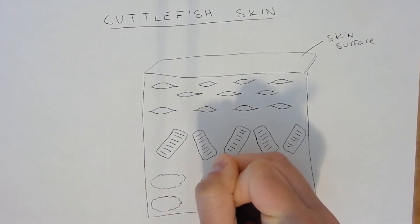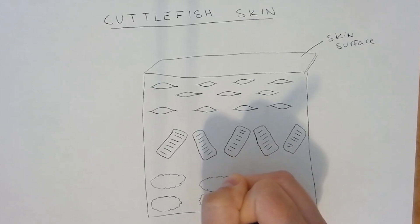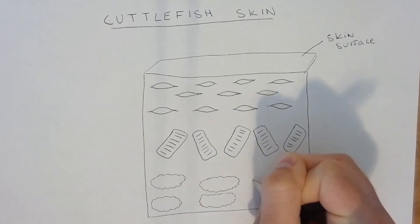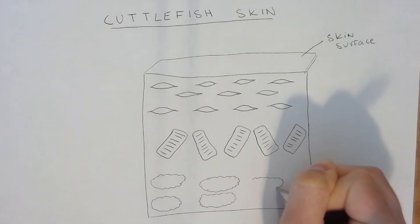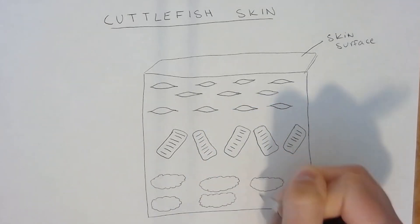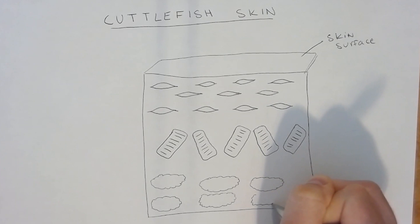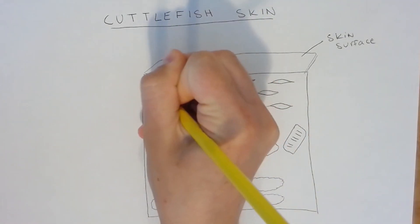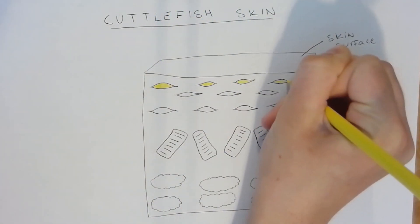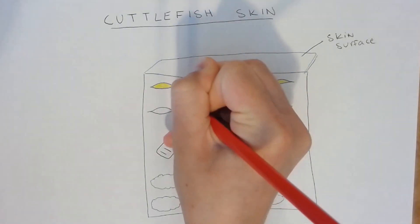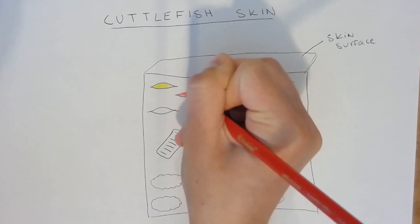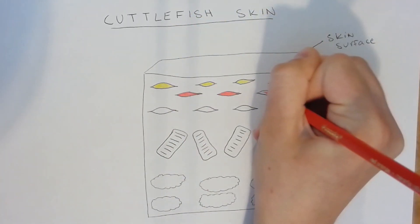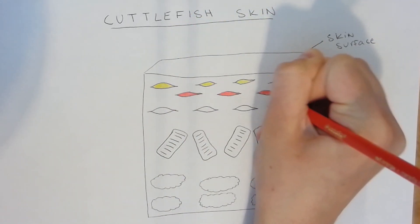Finally, the last skin layer is the leucophore layer, found in cuttlefish and octopus but not squids. Leucophores scatter full-spectrum light, causing them to appear white. Leucophores provide the white backdrop for many cuttlefish skin patterns.